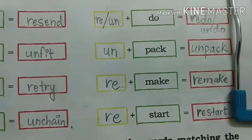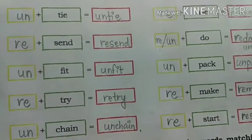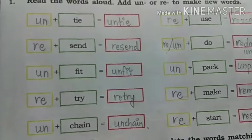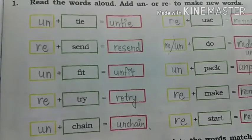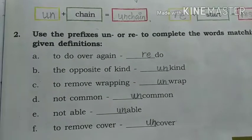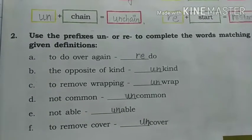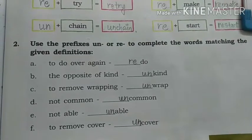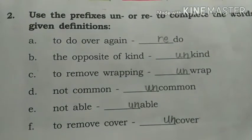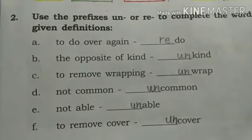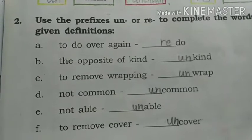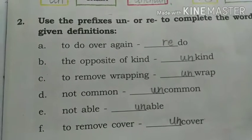So this is how we completed the exercise on prefixes. Do you all understand what prefixes are now? Very good. Now come to the second question. In the next question, we have to use the prefixes 'un' or 're' to complete the words matching the given definitions. As we know, 'un' means 'not' and 're' means to do again.